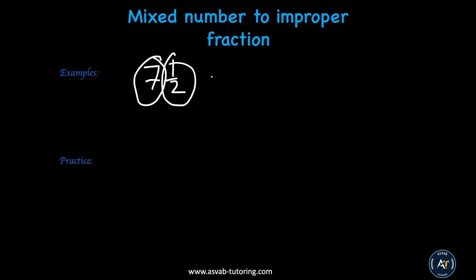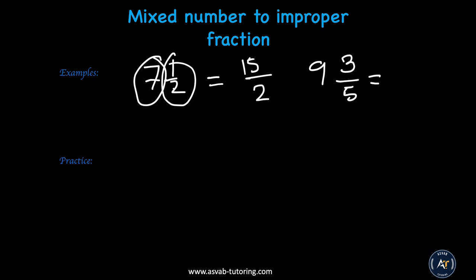How do you make a mixed number into an improper fraction? You need to multiply 7 times 2, which is 14, then add 1, giving you 15 over 2. Let me give you another one: 9 and 3 fifths. So 9 times 5 is 45, plus 3 is 48, giving you 48 over 5.